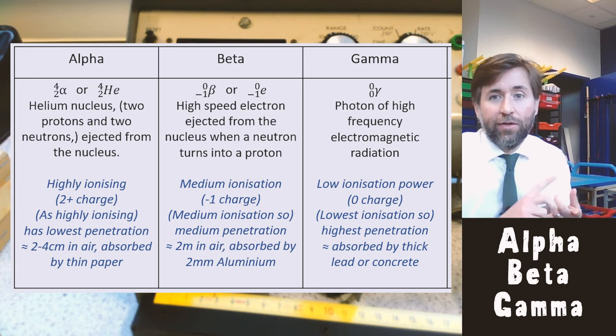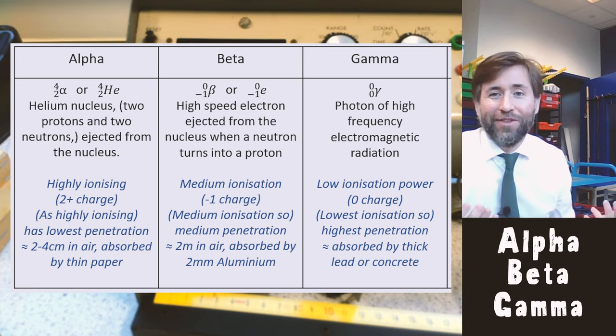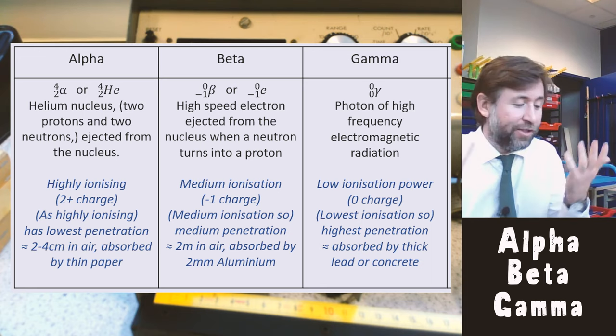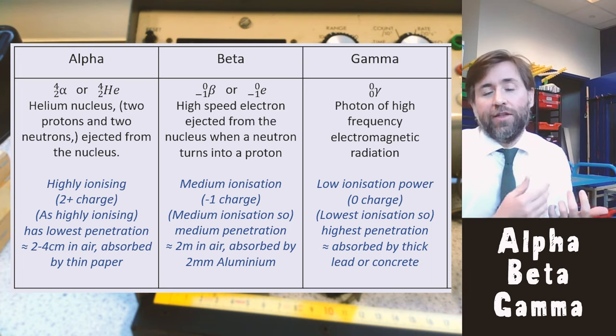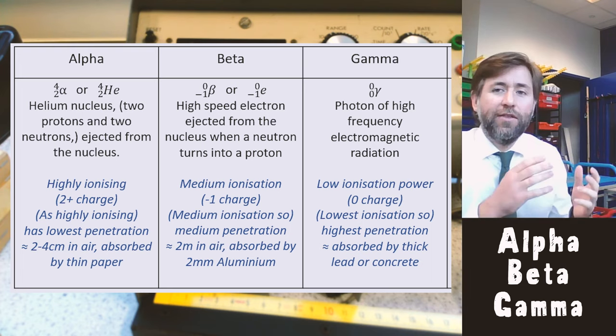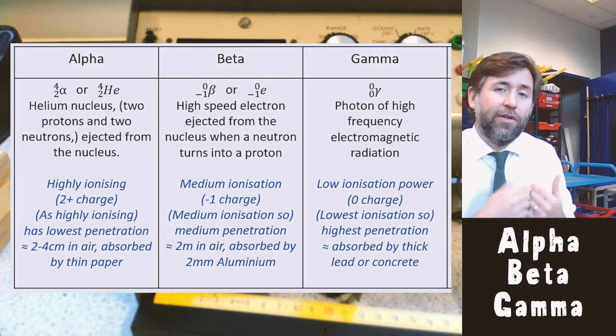Alpha in one respect is not very dangerous because if it is outside the body and if you're more than two centimeters of air or you're wearing clothes or you've got the skin on your body, it isn't going to get into the body. But if it does get inside the body then it is going to be very dangerous. So it's very, very dangerous at close range or inside the body because it is so ionizing.